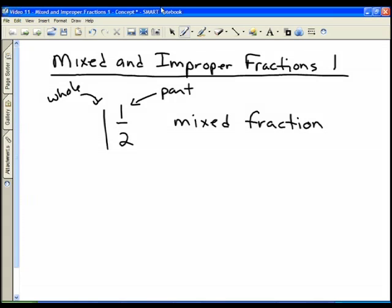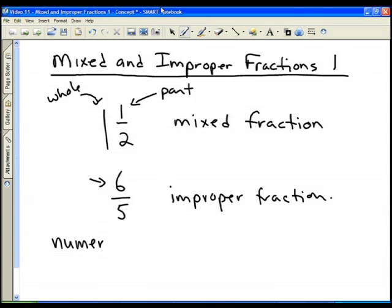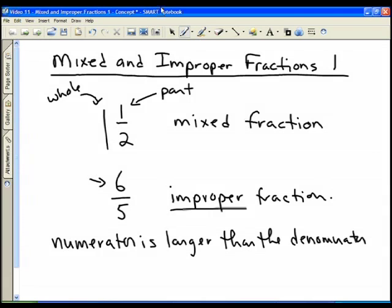An improper fraction is something like 6 over 5, and this is called an improper fraction. It's improper because the numerator is bigger than the denominator. If the numerator is larger than the denominator, then it is an improper fraction. So a mixed fraction has a whole number part and part of a whole, and an improper fraction always will have a numerator larger than a denominator.